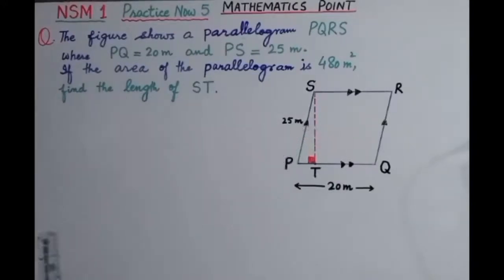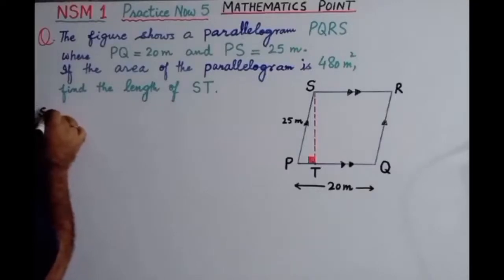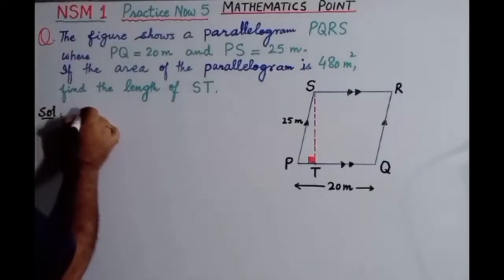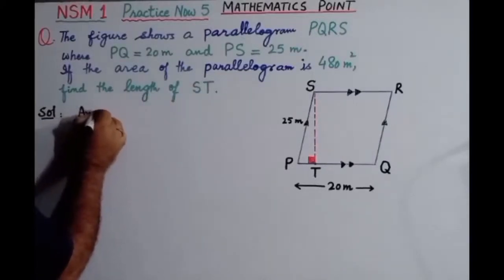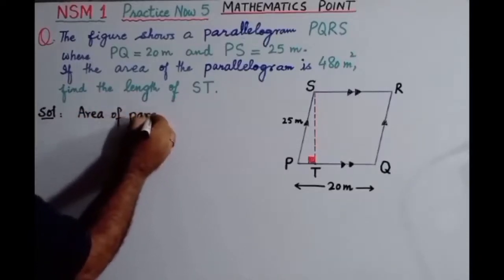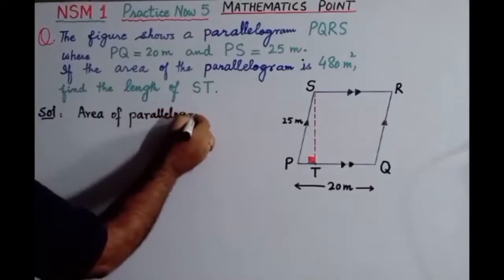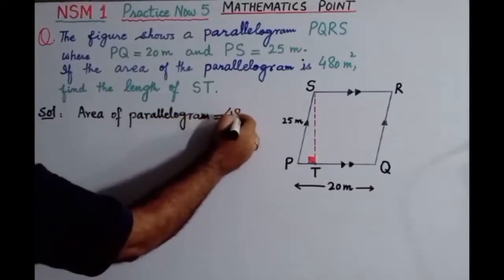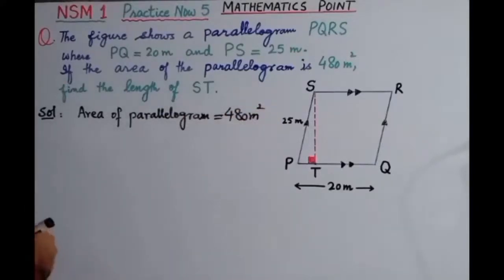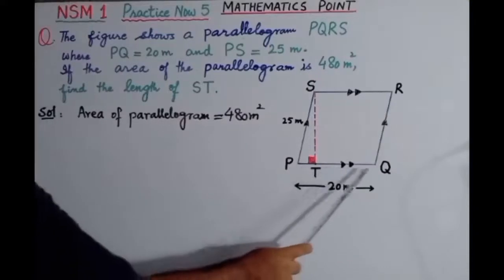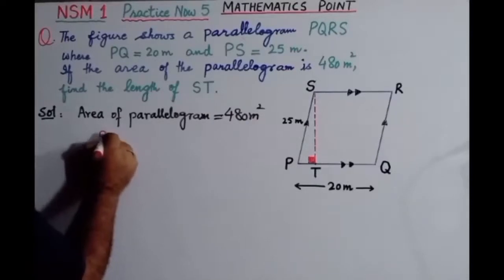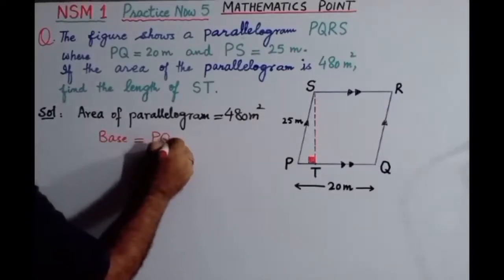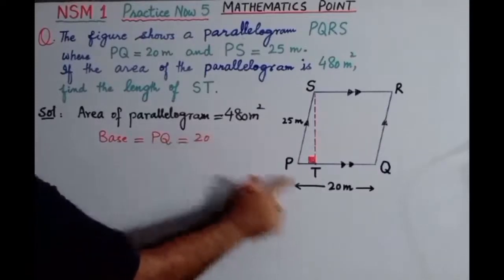First of all, we are going to write down the data — the information given in Practice Now 5. Area of parallelogram is equal to 480 meter square. If we consider PQ as the base, then the length of PQ is equal to 20 meters.